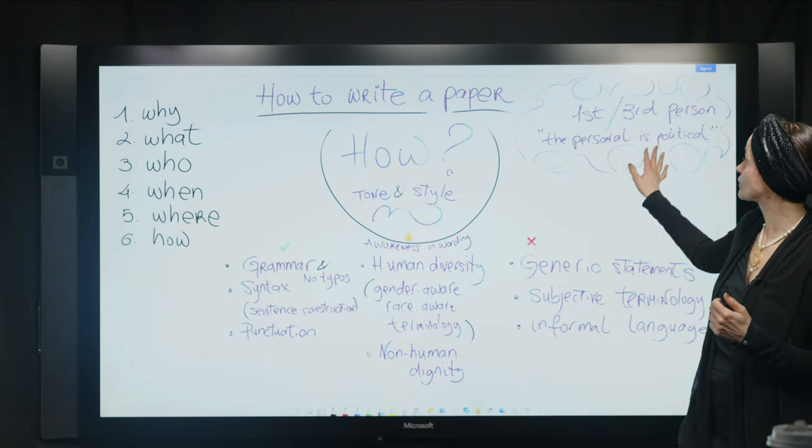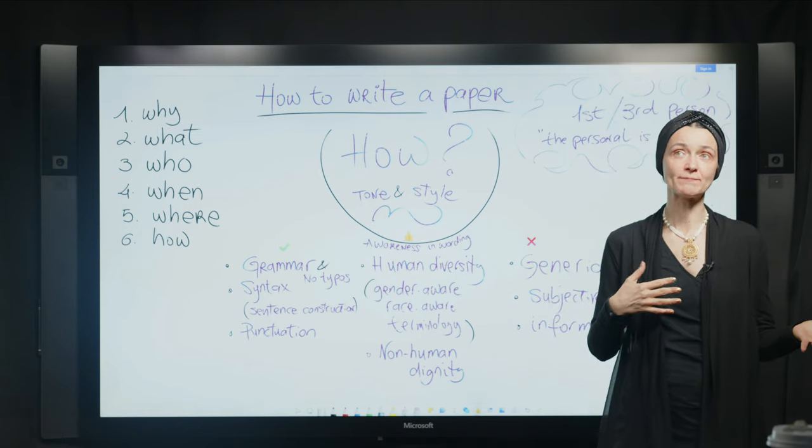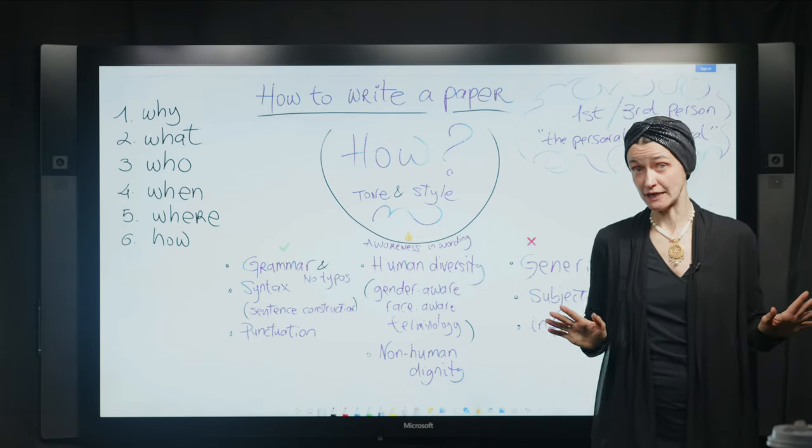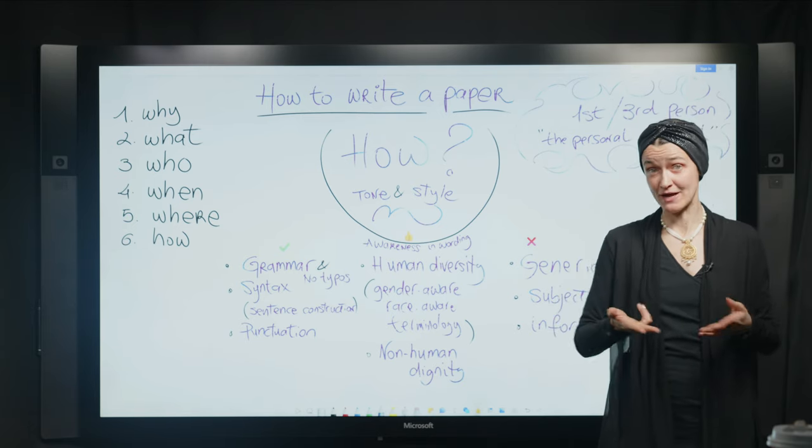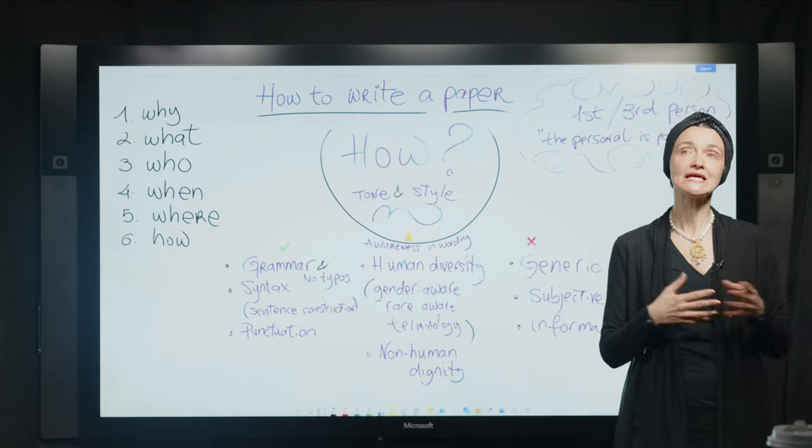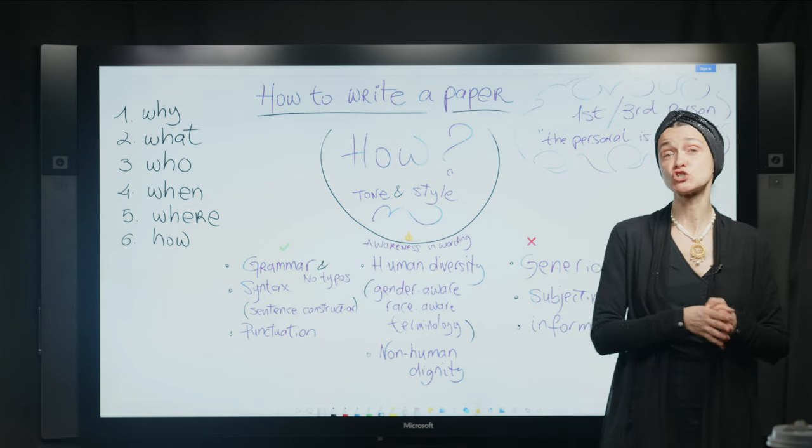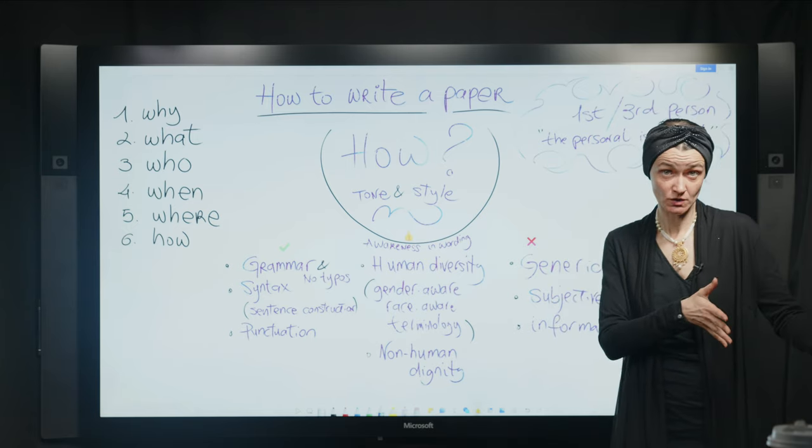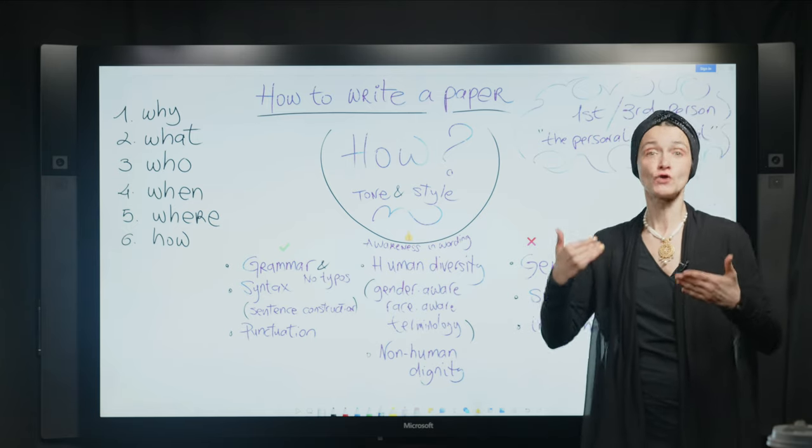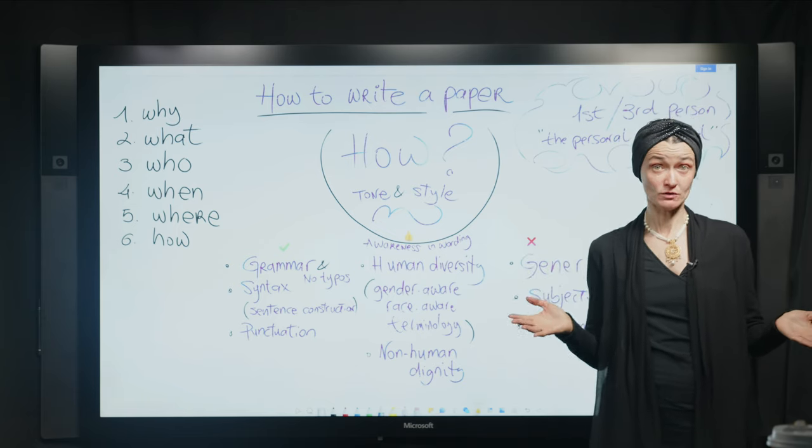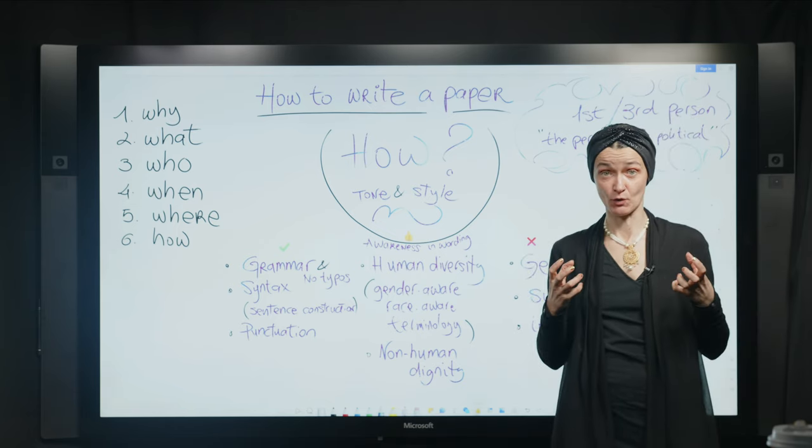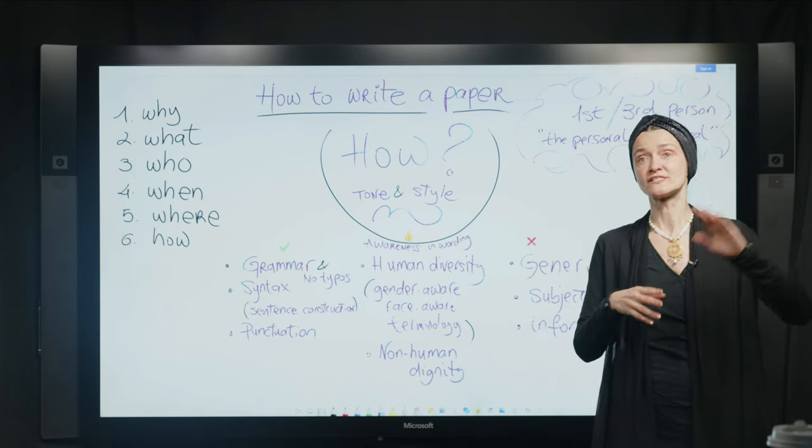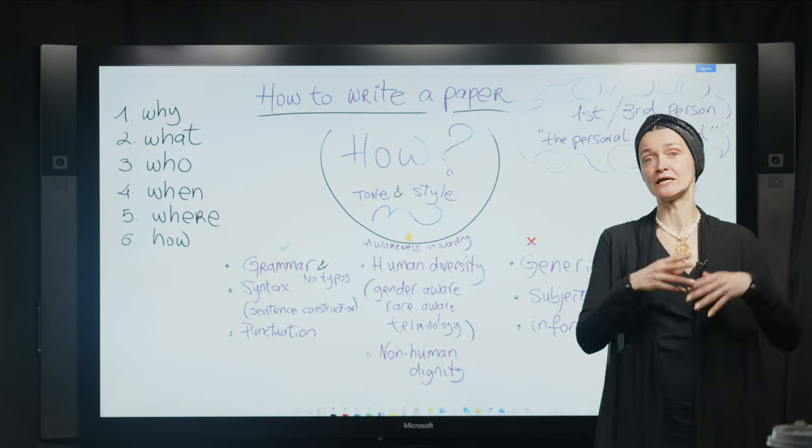So I want to add something here because sometimes students ask me, well, should I write my paper in the first person or in the third person? So traditionally, papers were written in the third person. Because the idea was that academia was objective. This changed in the 70s when a lot of people realized that a lot of these papers that were written from the third person were actually not objective at all. They were all coming from one specific standpoint, which usually was the standpoint, for instance, of the colonizer, the standpoint of the dominant groups in society.